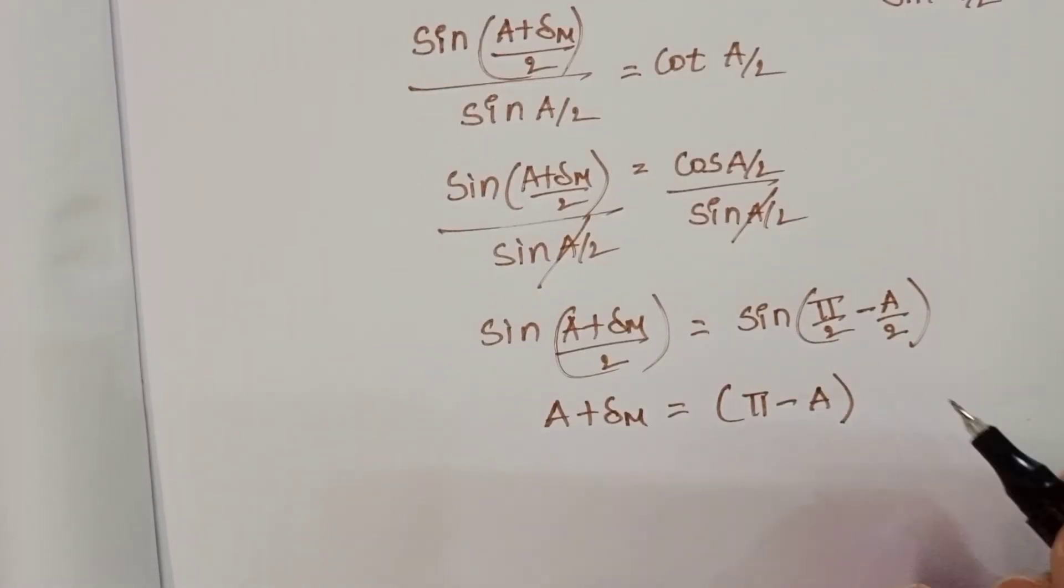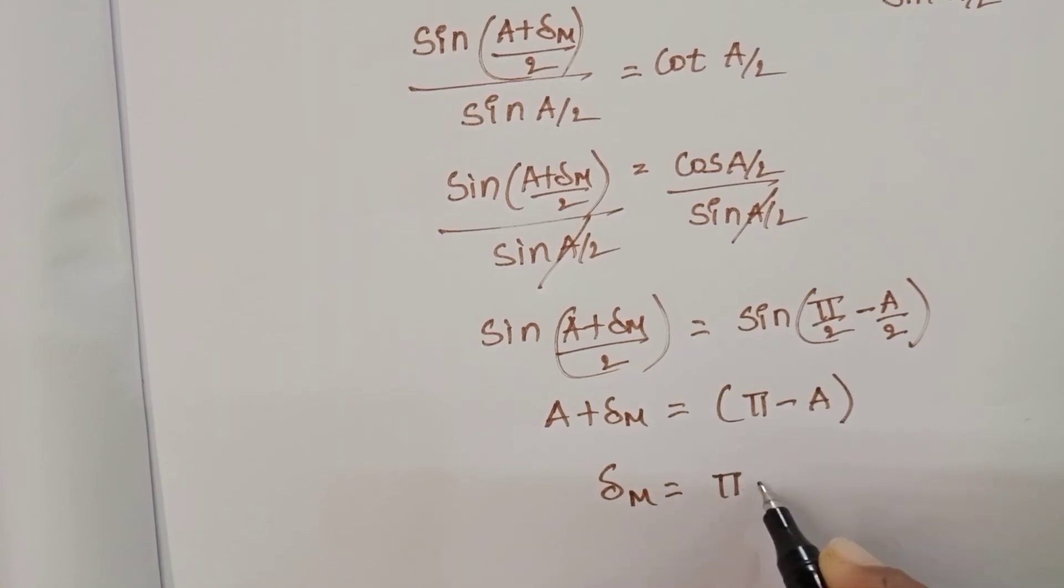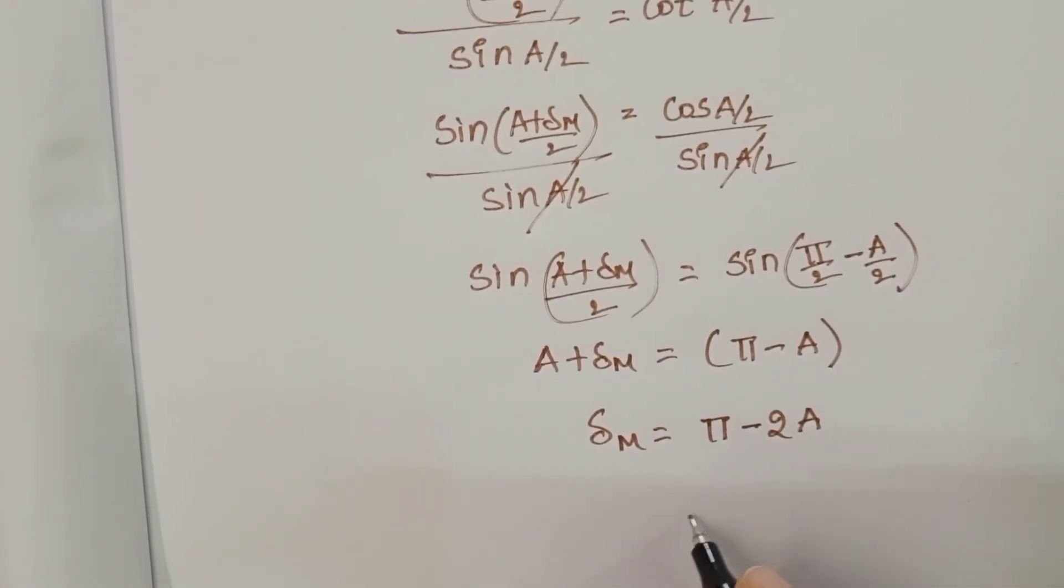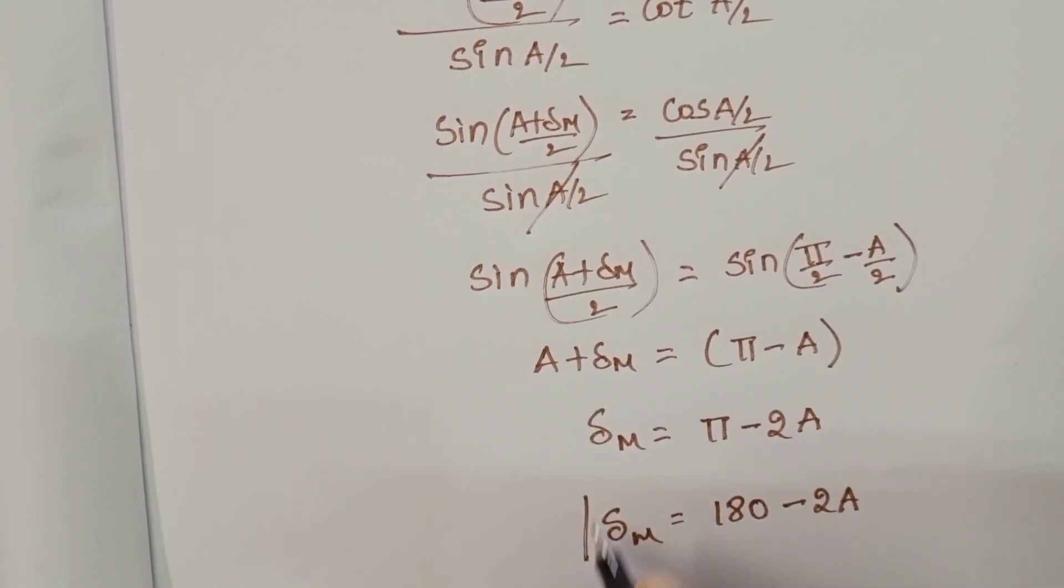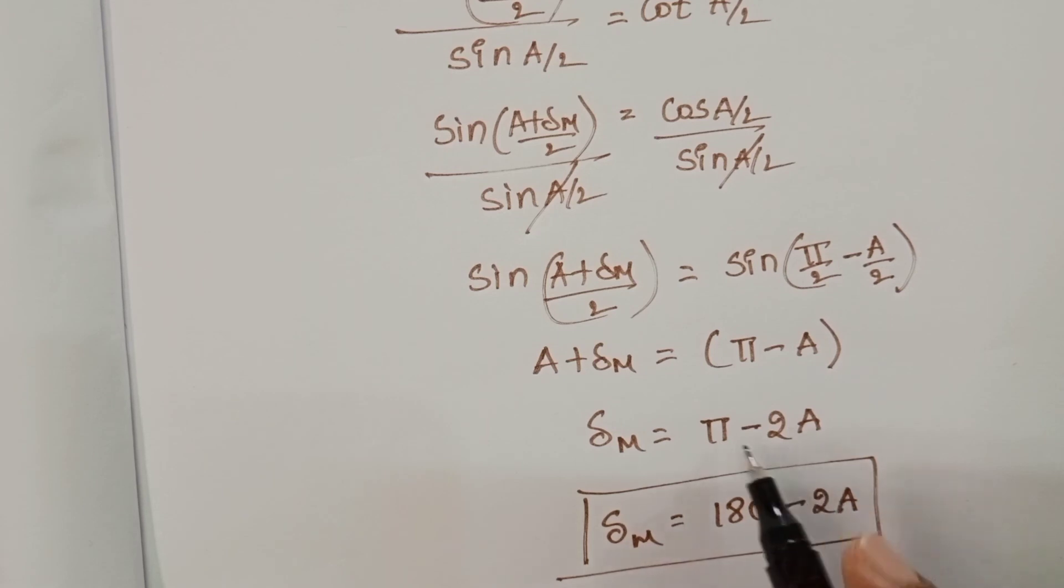Then it becomes π - 2A. The angle of minimum deviation is 180 - 2A. This is the correct option. The angle of minimum deviation equals π - 2A or 180 - 2A.